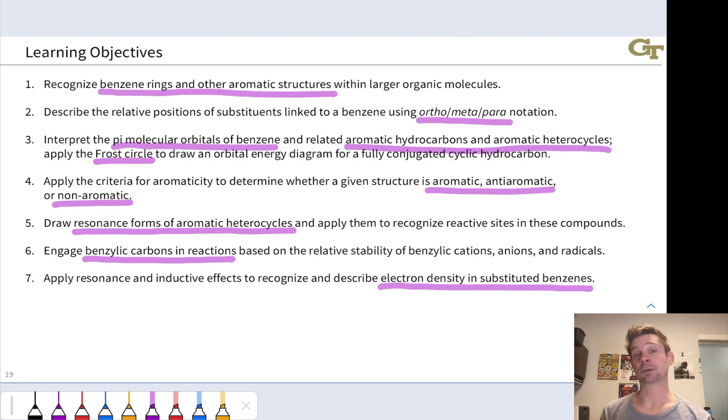We'll look at the pi molecular orbitals of benzene. This will help us understand why benzene and other aromatic compounds are so stable. We'll also learn a pretty straightforward mnemonic, geometric mnemonic device for drawing the pi molecular orbital energy diagrams of aromatic hydrocarbons. It's called the frost circle. We'll learn how to determine using four simple criteria whether a molecule is aromatic, anti-aromatic, or non-aromatic.